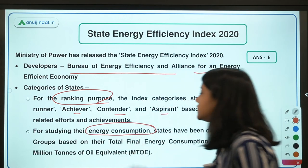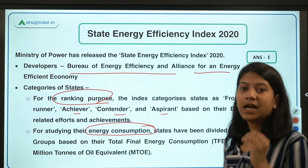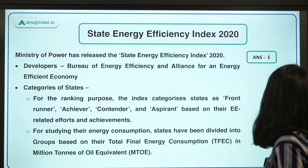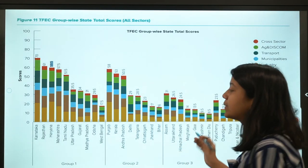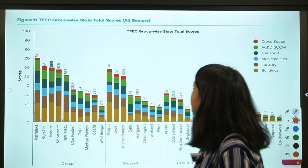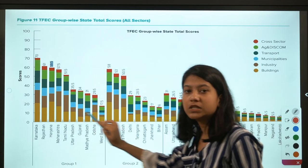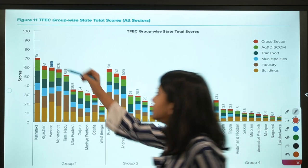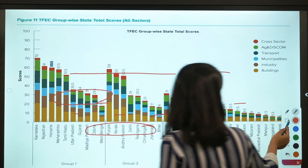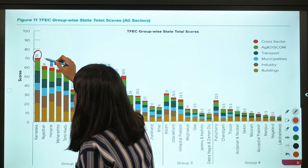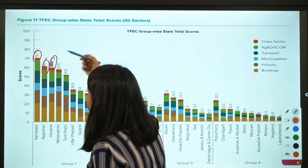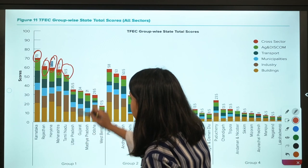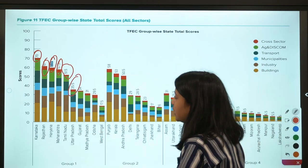For studying energy consumption, the states have been divided into separate groups based on total final energy consumption. The top scoring states are: Karnataka at 70, Rajasthan at 61, Haryana at 59.5, Maharashtra at 57.5, and Tamil Nadu at 51.5. Uttar Pradesh scored 35.5 and Gujarat scored 34.